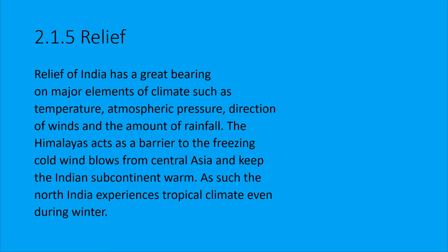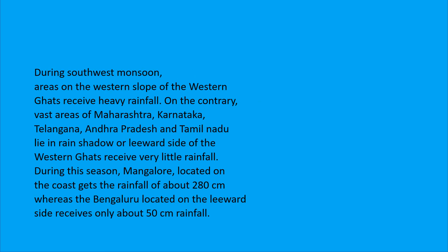Mountains act as big obstacles to winds. They block cold winds from the north. For example, the Himalayas act as a barrier protecting the northern plains, including the Delhi area, from cold winds. The Western Ghats stop the South-West Monsoon, which is why the western coast receives heavy rainfall.